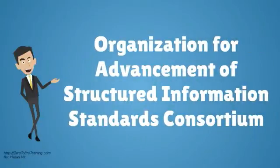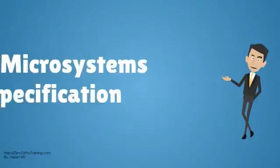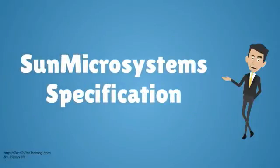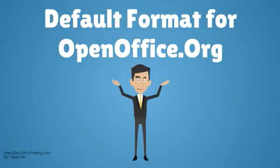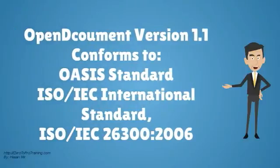The standard was developed by a technical committee of the organization known as OASIS. OASIS stands for the Organization for Advancement of Structured Information Standards consortium. It was based on the Sun Microsystems specification for OpenOffice XML, which was the default format for the OpenOffice.org office suite. In addition to being an OASIS standard, version 1.1 conforms to ISO/IEC standards as well.